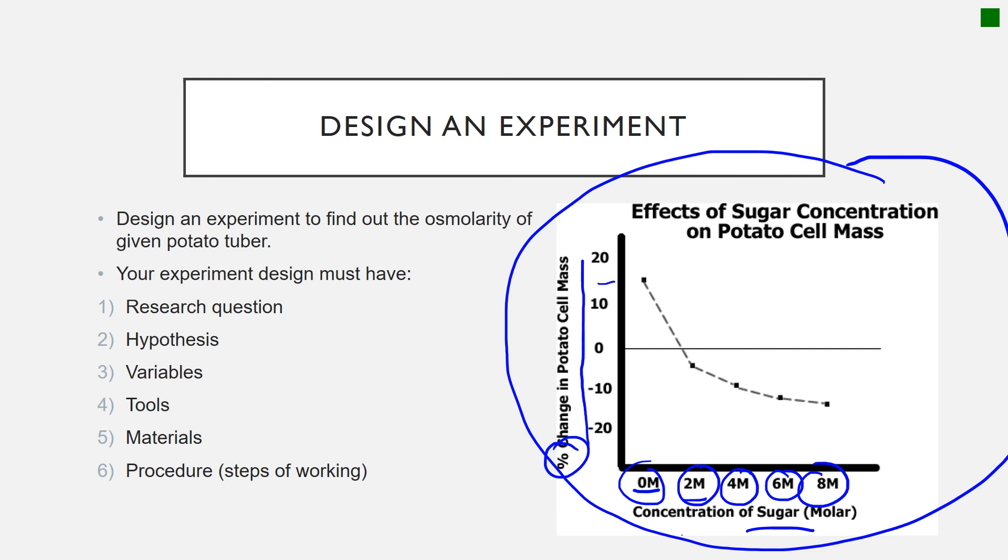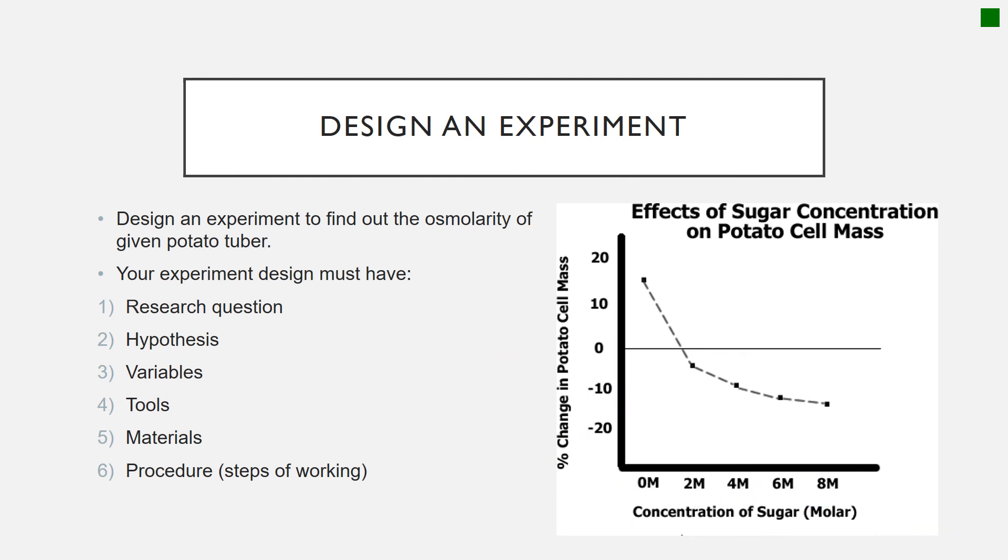If the percentage is positive, it means that the mass is gained. If 0, it means that there is no mass change. If it is negative, it means that the mass is lost. Okay, and then the diagram will look like this. So the one that is immersed in 0, the mass change is about positive 15 percent mass gain. And then in 2 molar concentration, it has about negative 5. So the mass starts to lose, and so on and so forth.